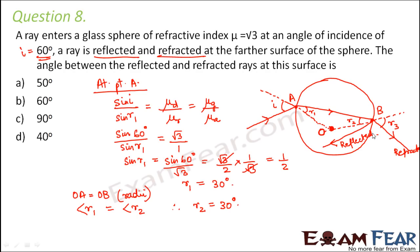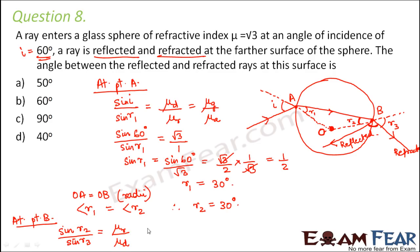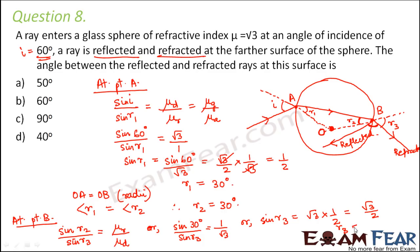We need to find the angle between the reflected ray and the refracted ray at point B. Focusing at point B and applying Snell's law: sin(R2) / sin(R3) = mu_rarer / mu_denser. So sin(30°) / sin(R3) = 1 / root 3. Therefore sin(R3) = root 3 × (1/2) = root 3 / 2, giving R3 = 60°.